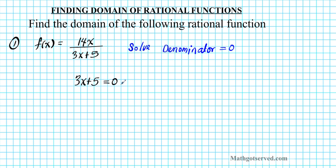Let's solve this for x. This is a simple algebraic equation — we just subtract 5 and divide by 3. Subtract 5 from both sides: we get 3x equals negative 5, then divide both sides by 3. Our answer is x equals negative 5 over 3.